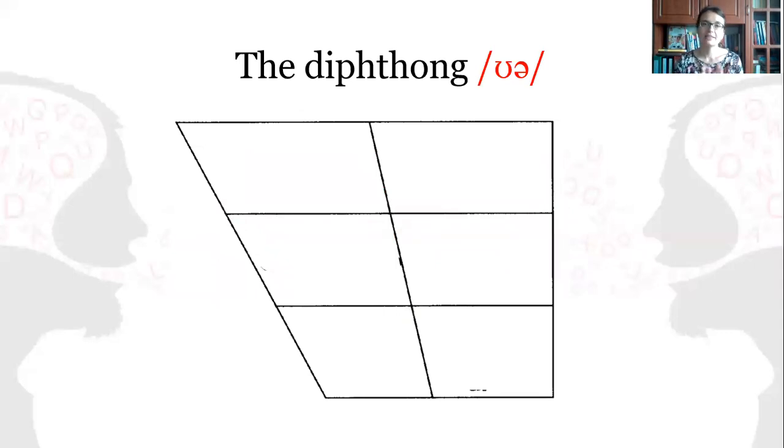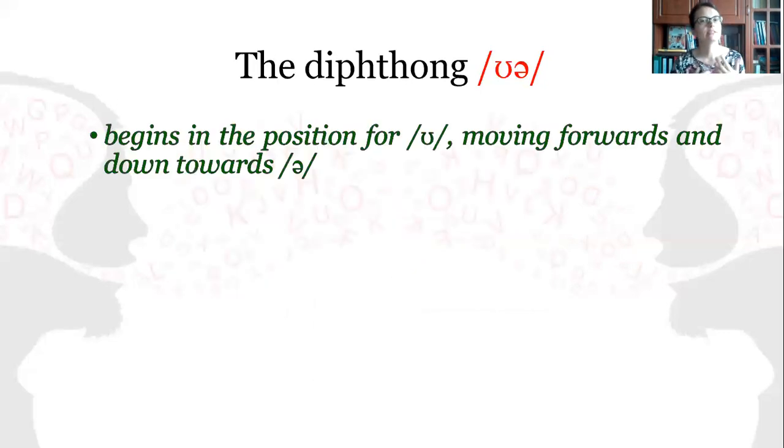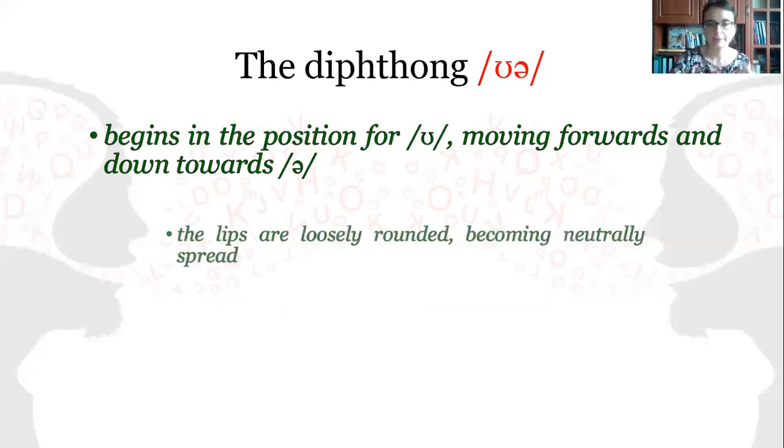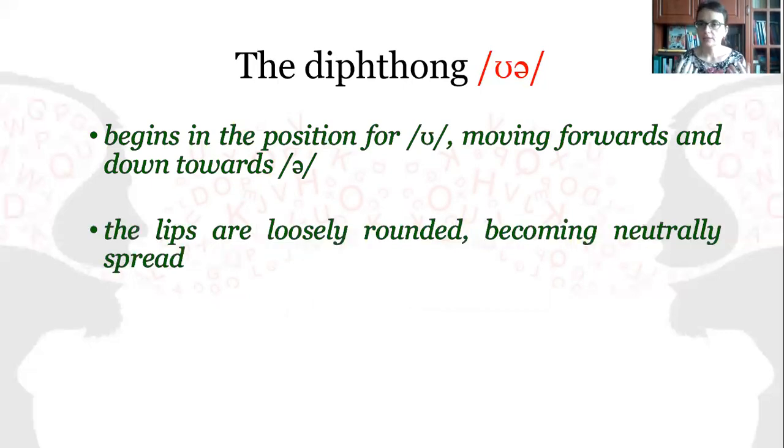Now let's see what are the characteristics of the diphthong /ʊə/. This is the graphic representation of the movement, which means that the diphthong begins in the position for /ʊ/, moving forwards and down towards /ə/. The lips are loosely rounded at the beginning, becoming neutrally spread for the second element.